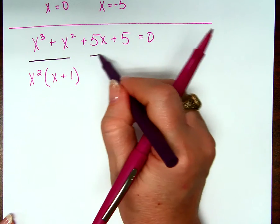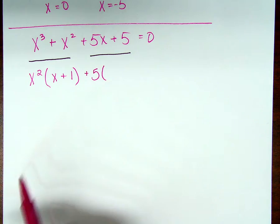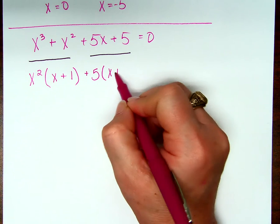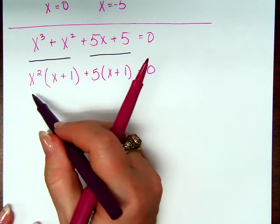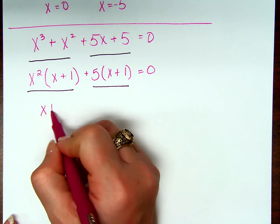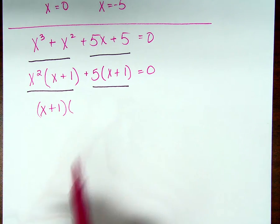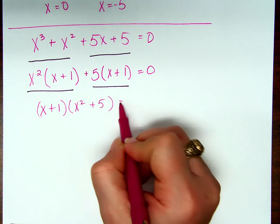Mm-hmm, x plus one. What's common in the second two terms? Five. What's left after I factor out a five? X plus one, exactly. What's common in these two terms, that one and that one? X plus one. What's left when I factor out an x plus one? Plus five, right?